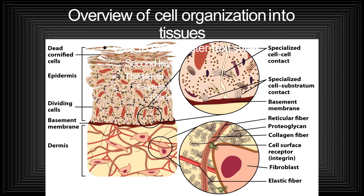In this slide you can clearly see the overview of cell organization into tissues. In the left part of the diagram, it shows dead confined cells in the upper side. Then there is epidermis present, then dividing cells, then a basement membrane, and then dermis. There are some specialized cell-cell contacts. You can see a tube going, and the cell converts into various structures called specialized cell substratum contacts at the bottom.